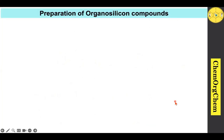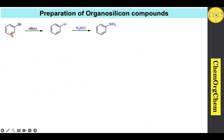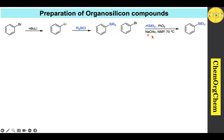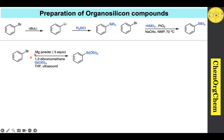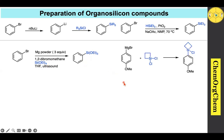Before moving to examples, let's see how to prepare organosilane compounds. First, bromobenzene reacts with n-butyllithium to produce phenyllithium, which then reacts with an alkyl silyl chloride to give the corresponding silane species. Another method involves bromobenzene reacting with triethylsilyl hydride in the presence of platinum oxide catalyst to give the organosilane. Bromobenzene can also be converted to a Grignard reagent using magnesium powder, and that Grignard reagent reacts with tetraethoxysilane to produce the corresponding silane product.